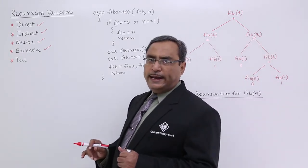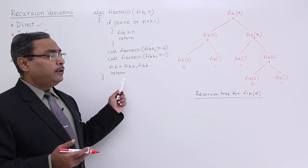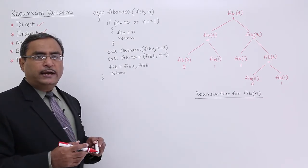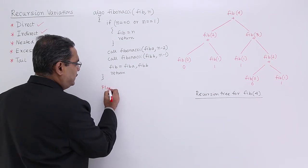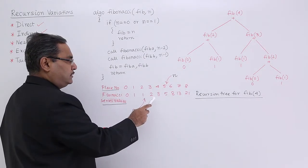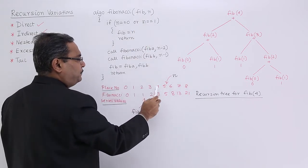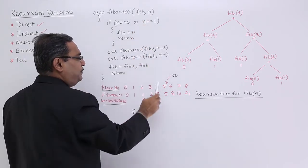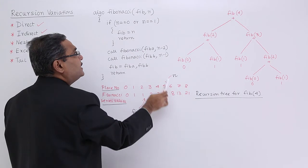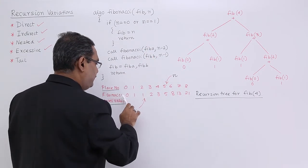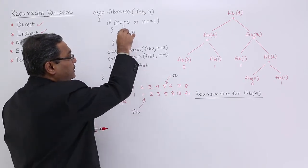We are going to discuss excessive recursion. Look at this particular program — it is very simple. This particular algorithm is actually depicting how to calculate the nth number of the Fibonacci series. Here, we have considered the place numbers. If we pass n equal to 0, then the Fibonacci number will be 0. If we pass 4 as n, the Fib will become 3. If we pass 6 as n, then we get 8 as Fib. This algorithm has been written on that basis.